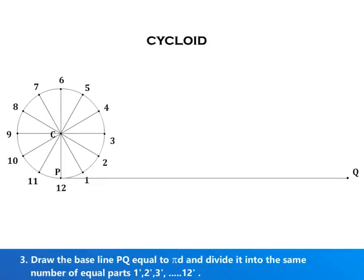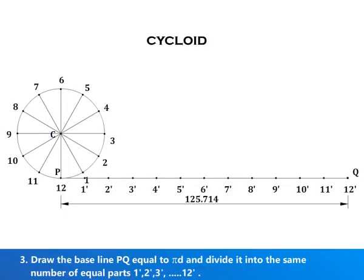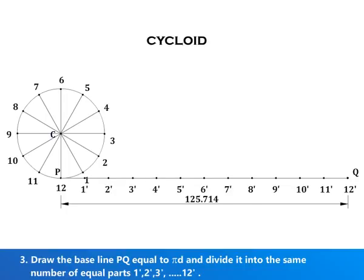Draw the baseline PQ equal to πd and divide it into the same number of equal parts and name them 1', 2', 3', etc.